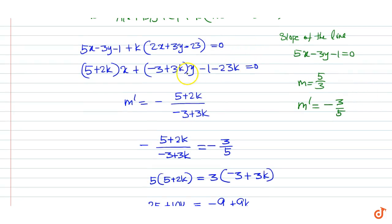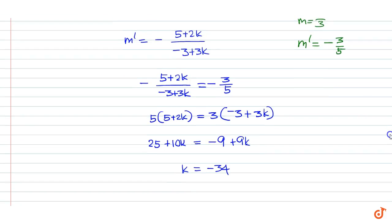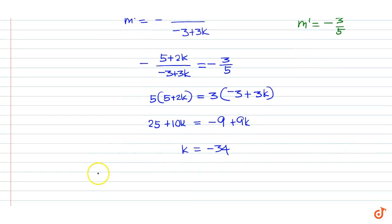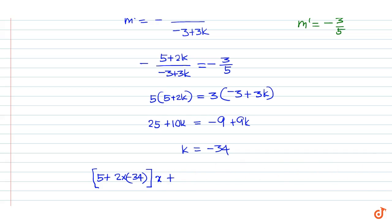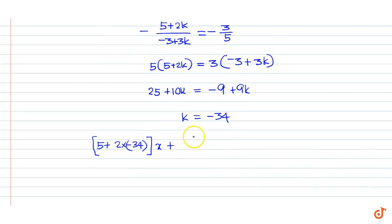This is the equation of the required line. Substituting k equal to minus 34, we get 5 plus 2k equals 5 plus 2 into minus 34, and minus 3 plus 3k equals minus 3 plus 3 into minus 34.